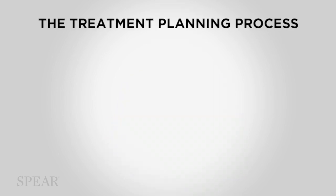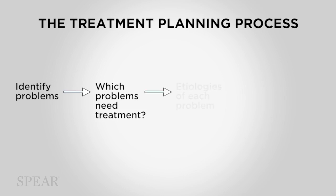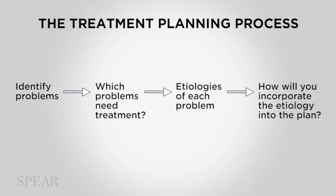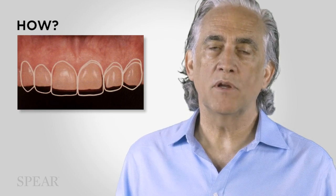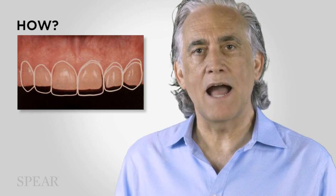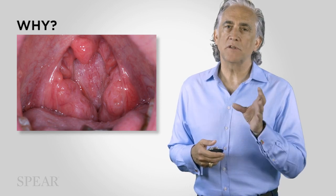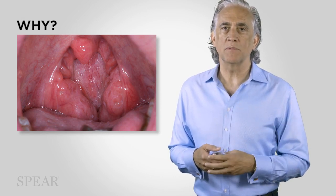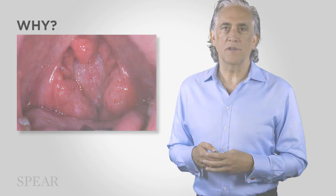We have this treatment planning process that's been around for a long time where we look for identifying the problems and the etiologies of the problems, but it's beginning to change. As prosthodontists, we were typically seeing the adult patient with wear or erosion on their teeth, or the adult TMD or aesthetics patient, and we would ask how did the damage occur and what are we going to do to fix it — all mechanical questions. Today, we're asking a different question: why did it occur in the first place? Because if you can get to the why, and the why happens to be a medical complication, you can actually end up with a patient that's healthier in the end.